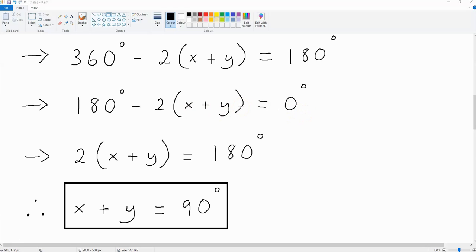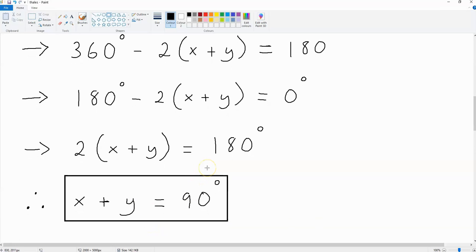Now from here, we can add 2 times x plus y to both sides of the equation. That is going to leave us with 2 times x plus y is 180 degrees. If we then divide both sides of this equation by 2, we end up with x plus y is equal to 90 degrees.